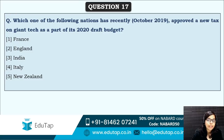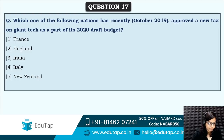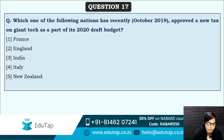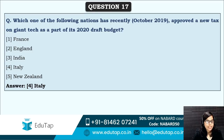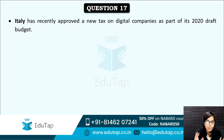Next: which of the following nations has recently approved a new digital tax on giant tech companies as part of its 2020 draft budget? This was very much in news. Most of you are saying Italy — and that is the correct answer. Italy has recently approved a new tax on digital companies as part of its 2020 draft budget.